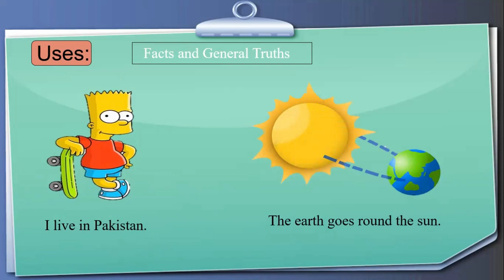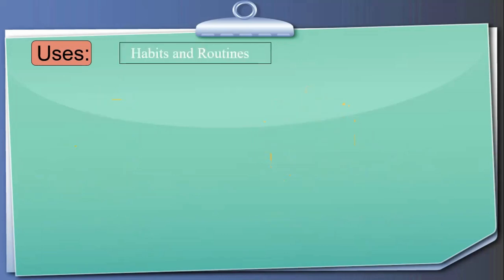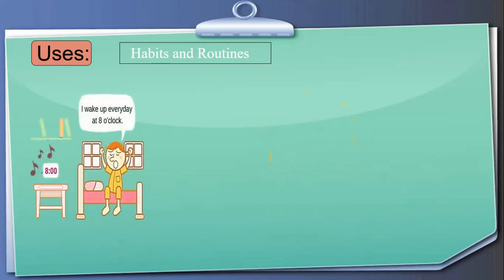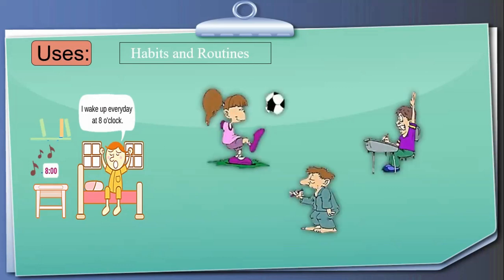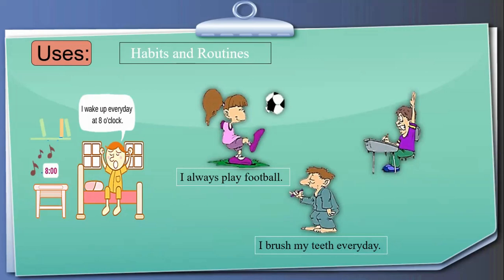Number two: present simple tense is used for habits and routines — this is the most commonly used function of this tense. For example, a boy says 'I wake up every day at eight o'clock' — this is his routine. Similarly: 'I always play football,' 'I brush my teeth every day,' or 'I study five hours daily.' These all describe habits and routines, expressed using present simple tense.